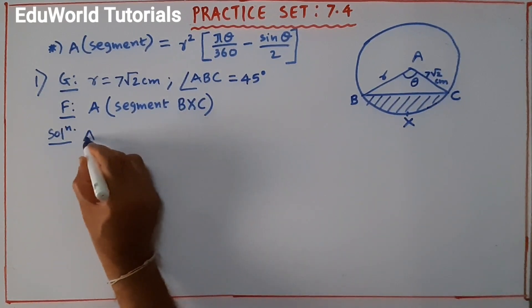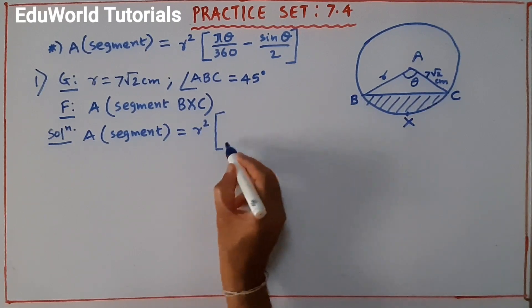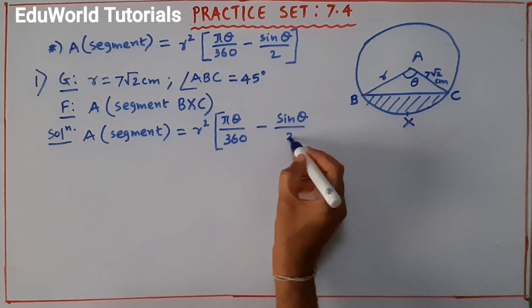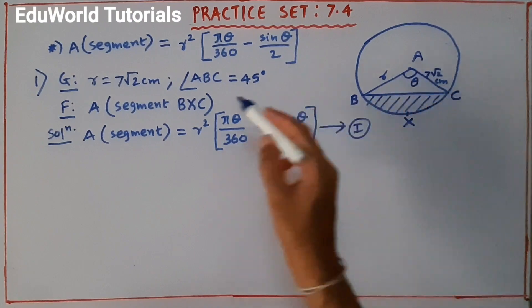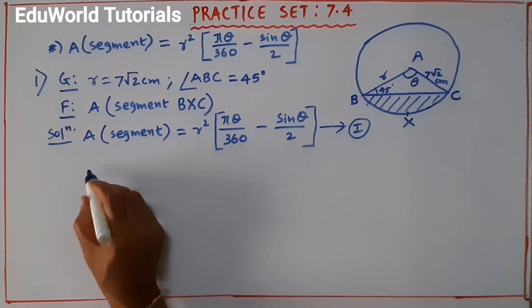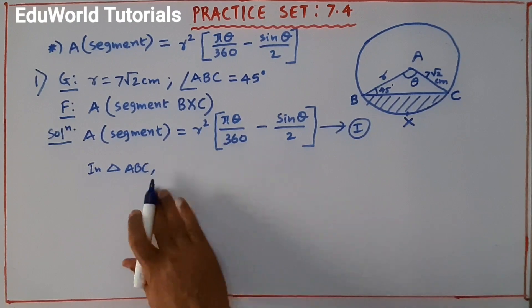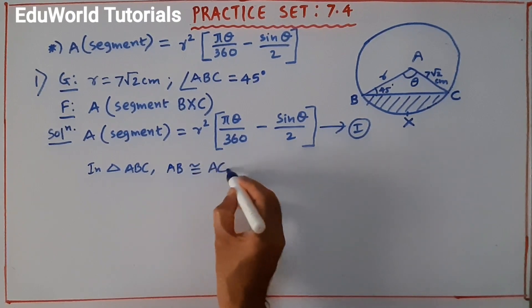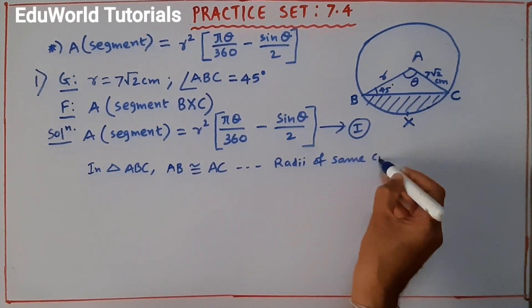In the solution, we first write the general formula for area of segment: R²{ π·θ/360 − sin θ/2 }. We do not have theta directly; we have angle ABC = 45°. So we find the central angle first. In triangle ABC, side AB is congruent to side AC — they are radii of the same circle — so this is an isosceles triangle.